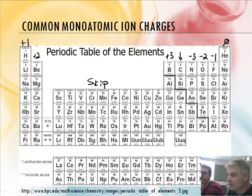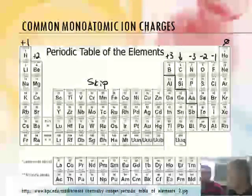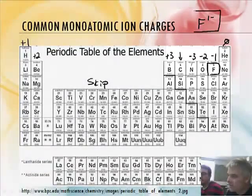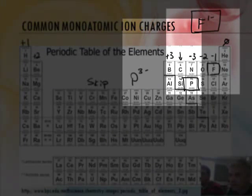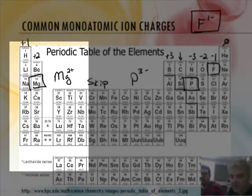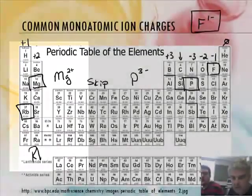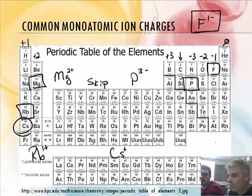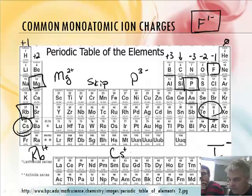These are going to be the charges. So if I say what is the charge of F, that's minus one — technically F one negative. Or if I do P, his charge would be minus three, or P three minus. Mg would be plus two, or Mg two positive. For cesium, you can say CS plus. And iodine would be I negative — iodide, actually, is what it's called.